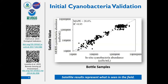What kind of HABs and toxins is the technology capable of detecting? This is specific to cyanobacteria. We are not detecting toxins — there is no direct remote sensing technology that can detect toxins, as there's no optical signature the satellites can pick up that's toxin related. We are only detecting the biomass of cyanobacteria in freshwater systems. Working with some coastal states, we have shown we can also detect cyanobacteria in brackish estuarine systems, though we haven't done extensive verification there yet.